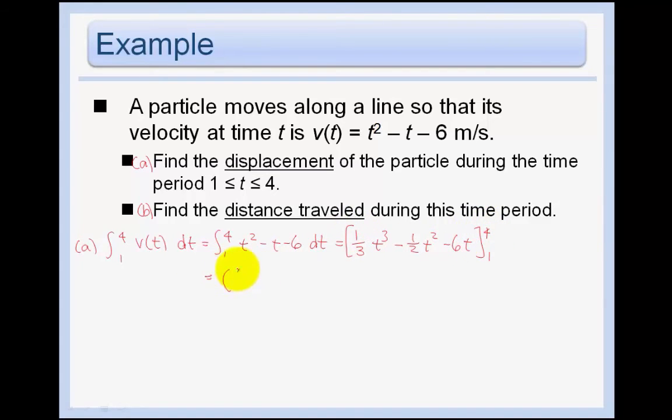And so we'll stick in a 4 everywhere. And then we'll stick in a 1 everywhere. So you should get negative 9 halves meters. What does that mean? That means that the particle position at t equals 4 is 4 and a half meters to the left of its position at time equals 1.